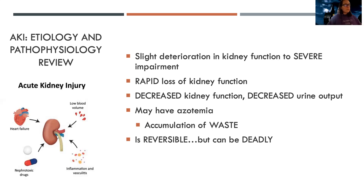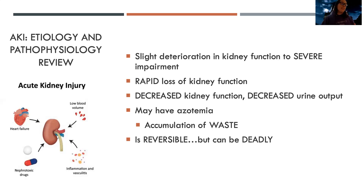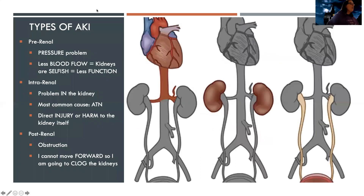The next thing we're going to talk about is the types of AKI. As you go through this with me, keep in mind that there are three types and then there are three phases of AKI. A lot of times students get these confused, so try to differentiate them in your mind. The types are about causes - we're breaking up the causes of AKI into types, asking where did the problem start? What caused the kidneys to shut down?